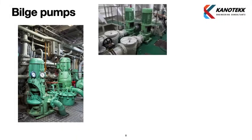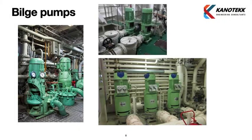Bilge pumps are centrifugal pumps with self-priming capability. In offshore jackup rigs, the capacity generally varies from 80 m³/hr to 140 m³/hr, and the head varies from around 40 meters to 60 meters, depending on the rig design.